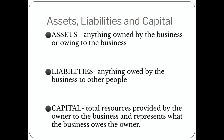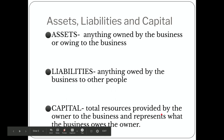After accounting and bookkeeping, we have three more big new words. These are: assets, which is defined as anything owned by or owing to the business; liabilities, defined as anything owed by the business to other people; and capital, the total resources provided by the owner to the business, representing what the business owes the owner.